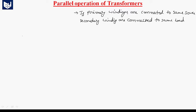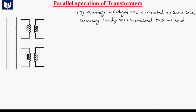Let us consider busbars like this. So these are the two busbars. Here we are connecting the two transformers. This is one transformer, and this is the insulation between the two windings. Let us say this is transformer A and this one is transformer B. These two transformers have their primaries connected to the same source and secondaries connected to the same load.